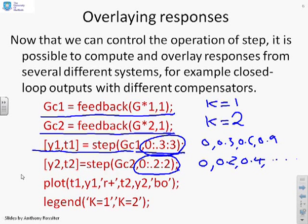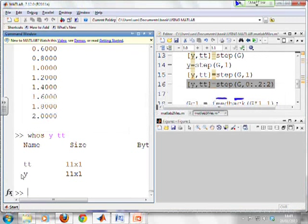And now, in order to overlay these, we just use the plot command. So you see plot time 1 against Y1. That's the response of the feedback with K equals 1. And you'll see what I've said here. I want red crosses. And then time 2 against output 2. And here I want blue circles. And just to clarify, so I know which plot is which when I'm looking at it, I've used a legend command. I've said the first plot corresponds to K equals 1. The second plot corresponds to K equals 2. So let's look at this now on our MATLAB window.